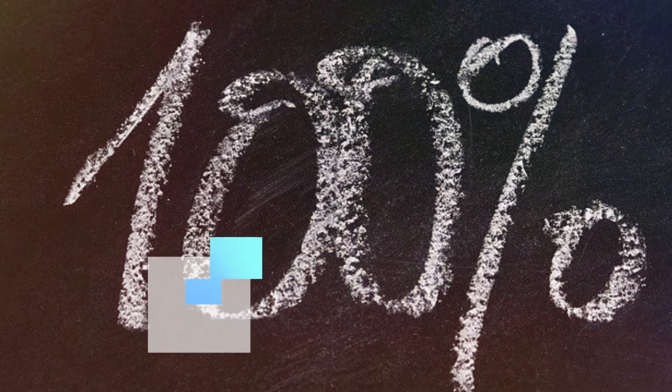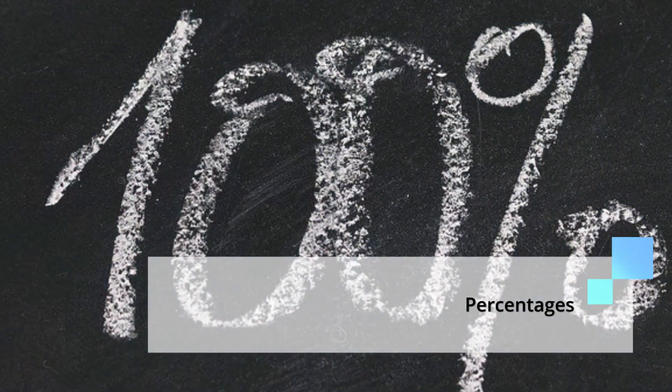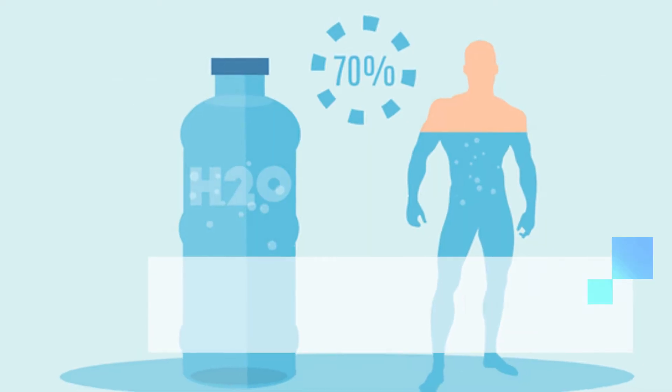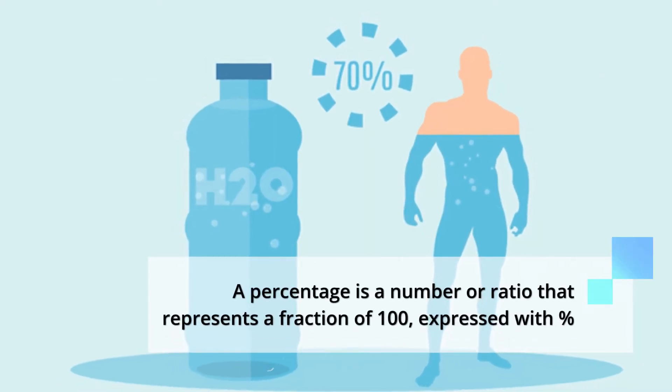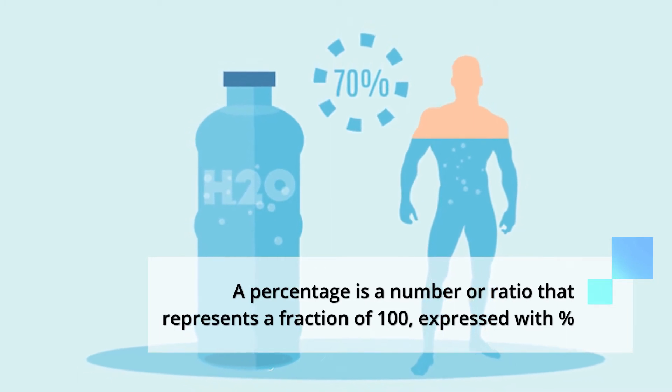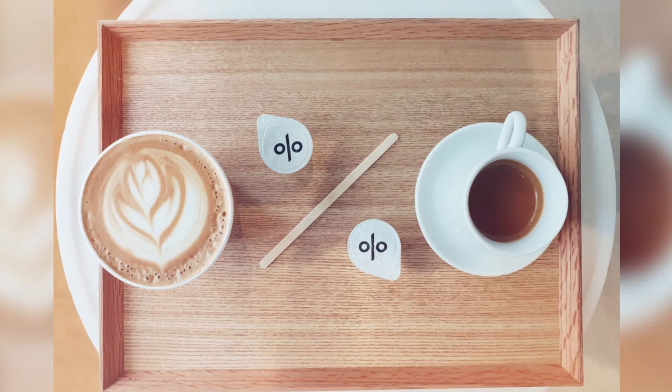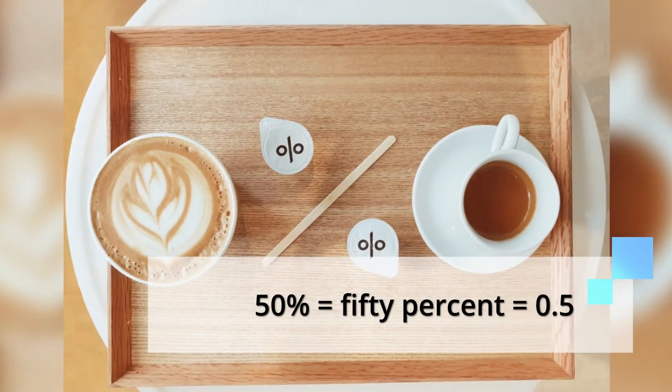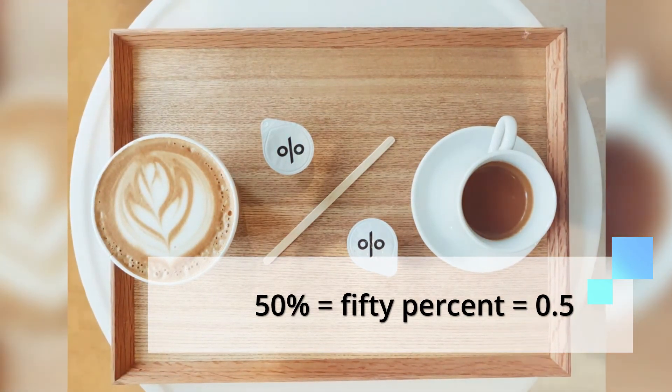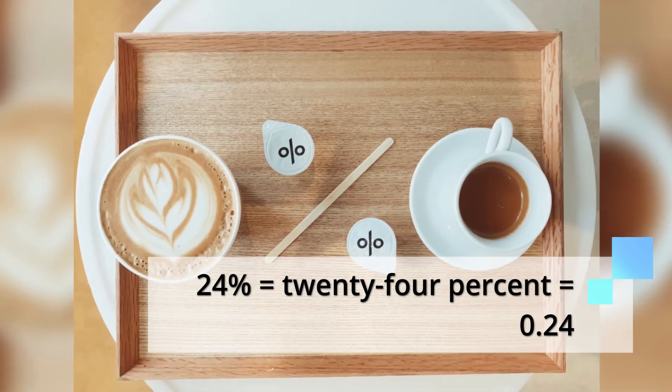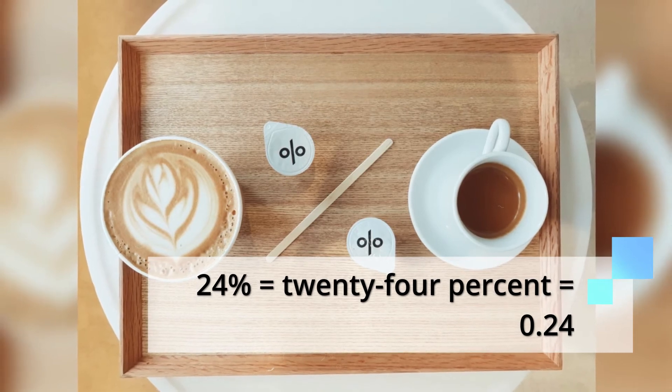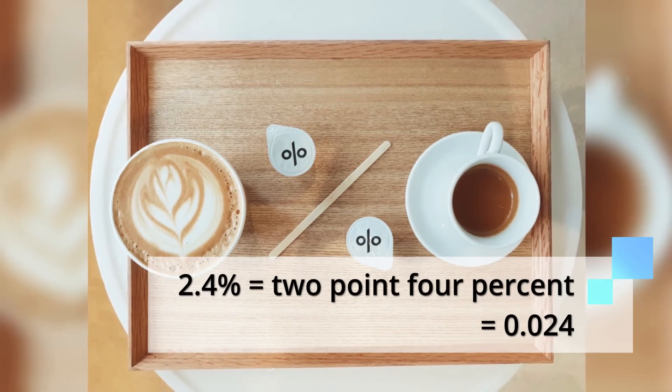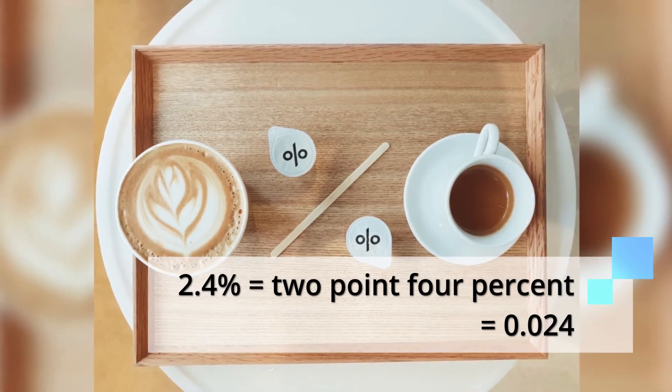Now let's move on to percentages. A percentage is a number or ratio that represents a fraction of 100 expressed with a percent sign. Percent literally means per 100. Here are some examples. 50% represents 0.5, 24% represents 0.24 in decimals, while 2.4% represents 0.024 in decimal.